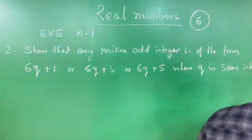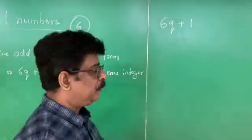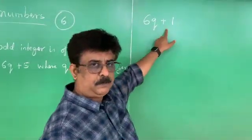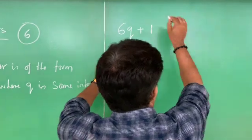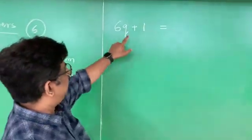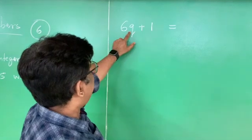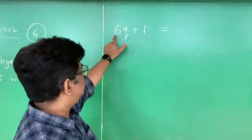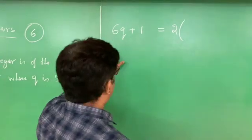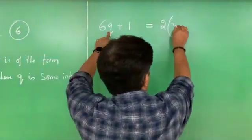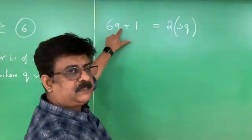First number: 6q+1. We have to prove it is an odd number. To prove this, I should express 6q+1 in the form of 2q+1. I want a 1 at the end — there is already a 1, so I leave that. Can I take 2 as a common factor from 6q? Yes. When I take 2 as a common factor, 6q becomes 2 times 3q.